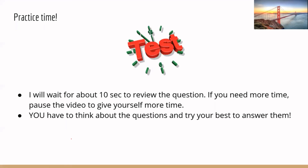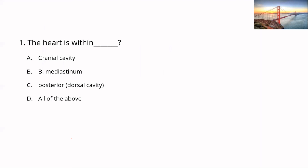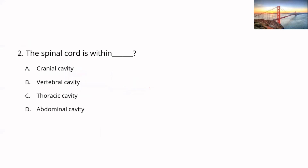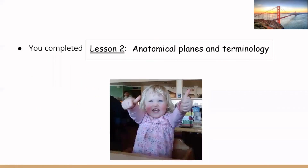Now let's practice. Question one: the heart is within the mediastinum — a subcavity within the thoracic cavity. Which organ is in the cranial cavity? The brain. The dorsal cavity includes the cranial cavity and the vertebral cavity, so the brain is in the cranial cavity and the spinal cord is in the vertebral cavity. Question two: the spinal cord is in the vertebral cavity. Congratulations, you've completed another lesson!